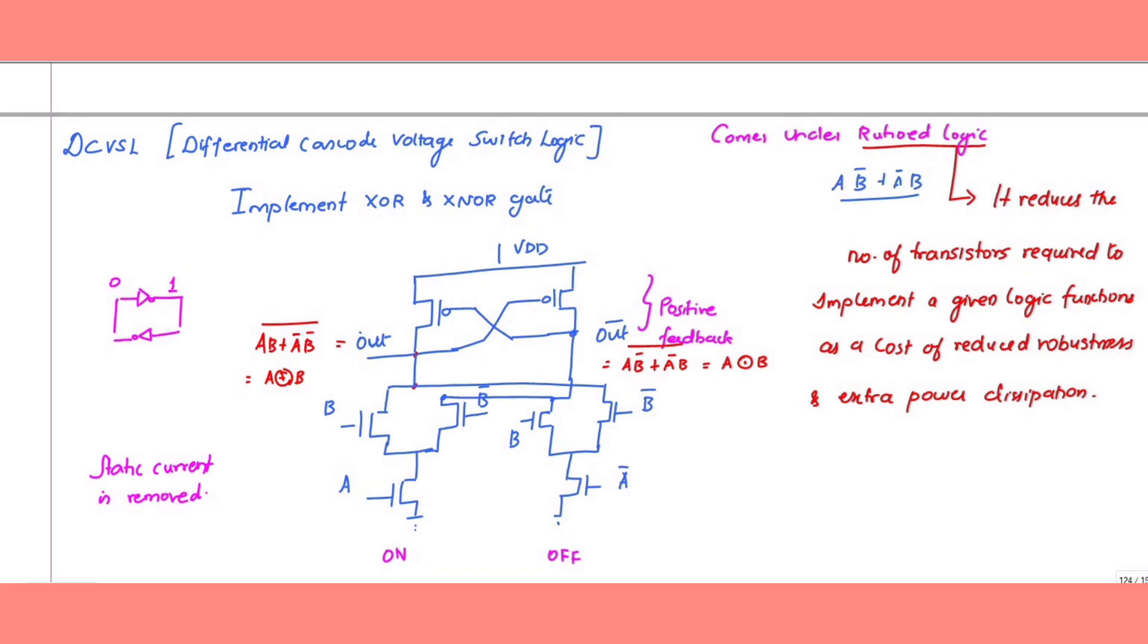In this video, we are going to discuss Differential Cascade Voltage Switch Logic (DCVSL). It comes under ratio logic, which reduces the number of transistors required to implement any logic function at the cost of reduced robustness and extra power dissipation.